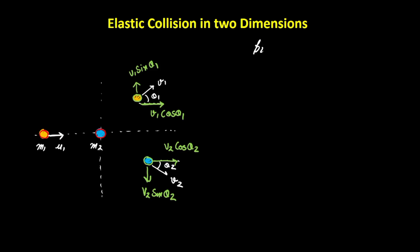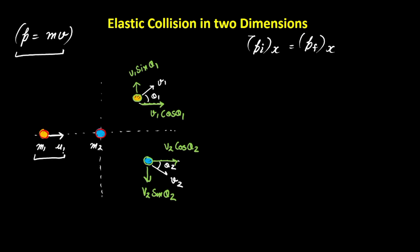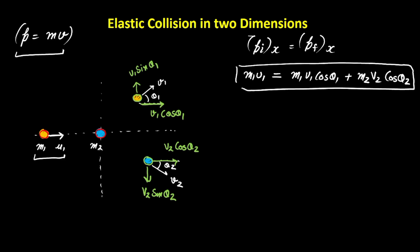Let's conserve momentum in the x-direction. Momentum equals mass times velocity. The initial momentum of the system is m1·u1, and the second ball's momentum is 0 since it is at rest. The final momentum equals m1·v1·cos(theta1) plus m2·v2·cos(theta2). This is our first equation.